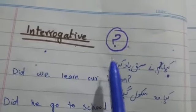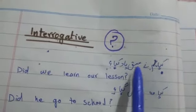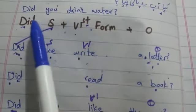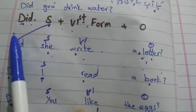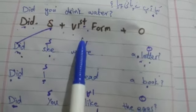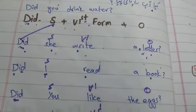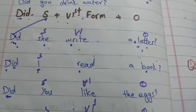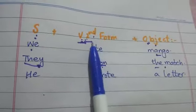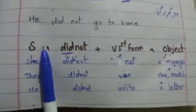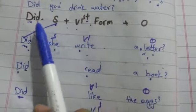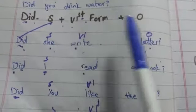جب interrogative sentence بنانا ہو — question بنانا ہو — تو 'did' helping verb کو subject سے پہلے لانا ہے۔ جیسے: 'Did she write a letter?' — یہاں بھی 'did' کے ساتھ verb کی first form use ہوتی ہے۔ 'Did I read a book?' 'Did you like the eggs?' Interrogative میں: did + subject + verb first form + object لکھنا ہے۔ Simple past tense میں: subject + verb second form + object۔ Negative میں: subject + did not + verb first form + object۔